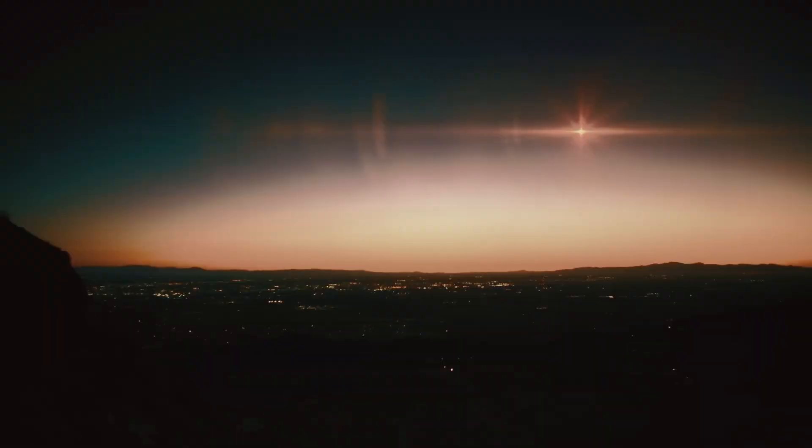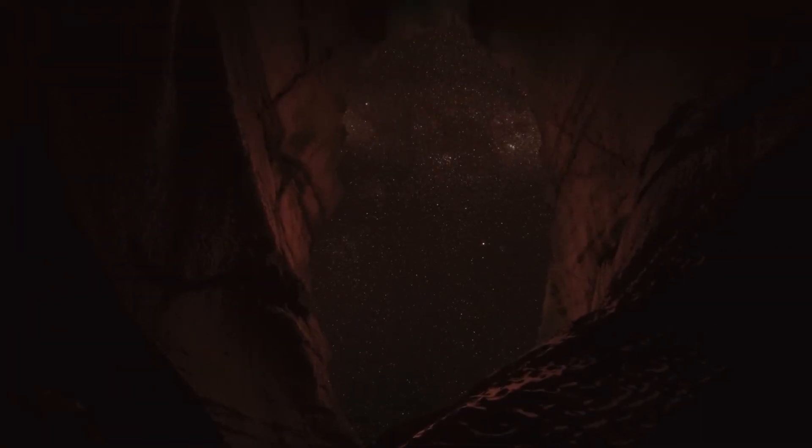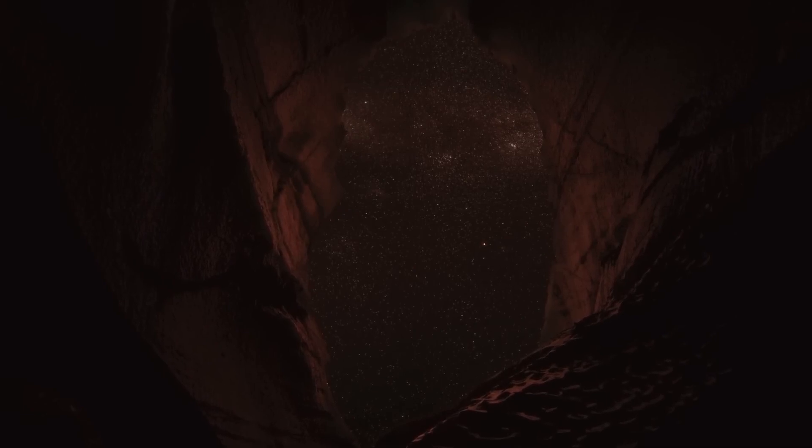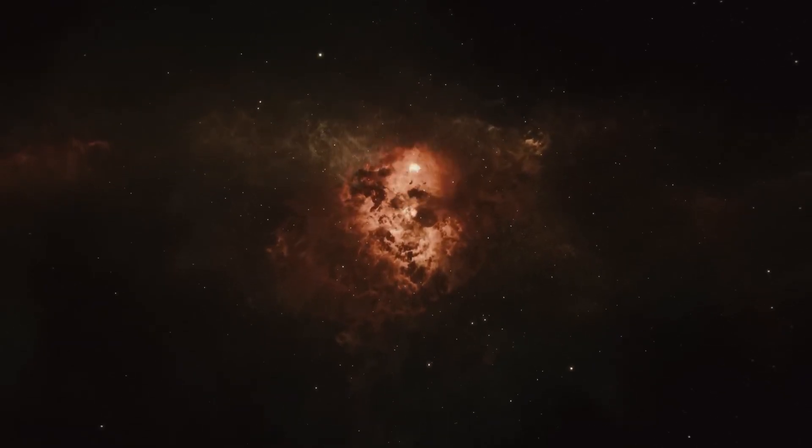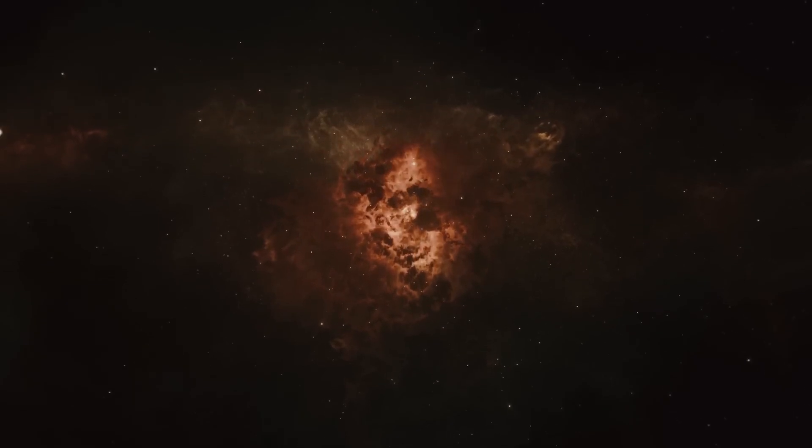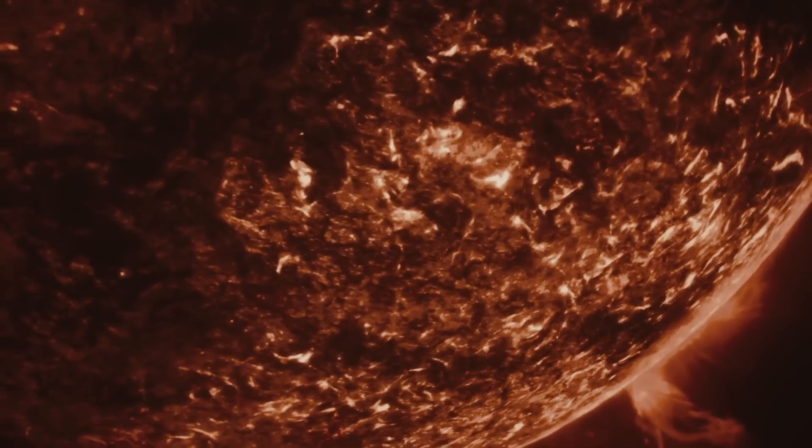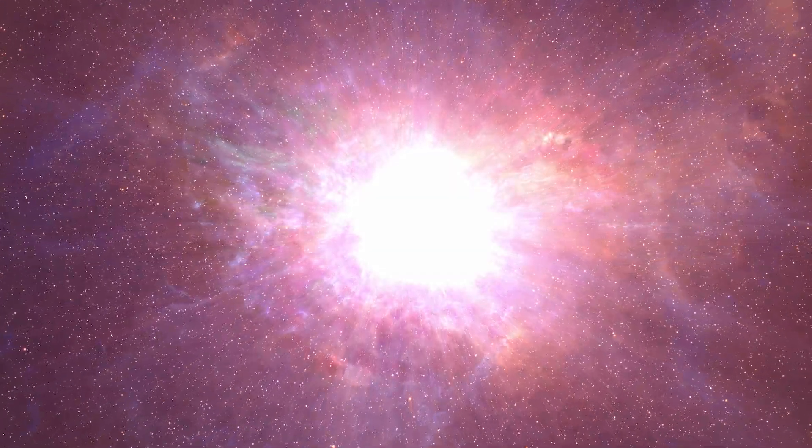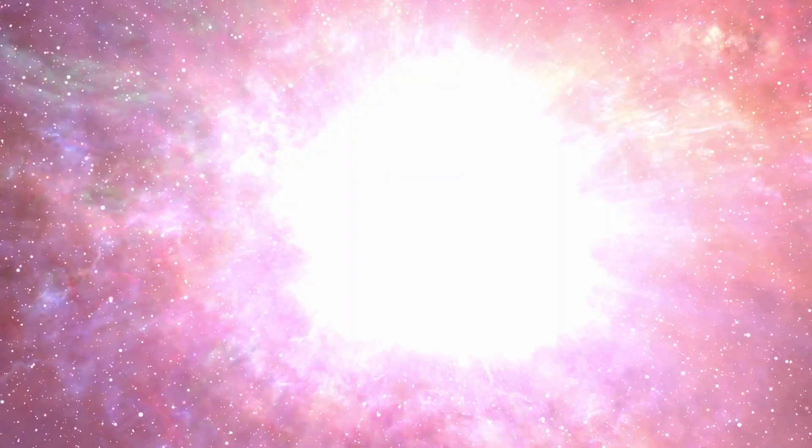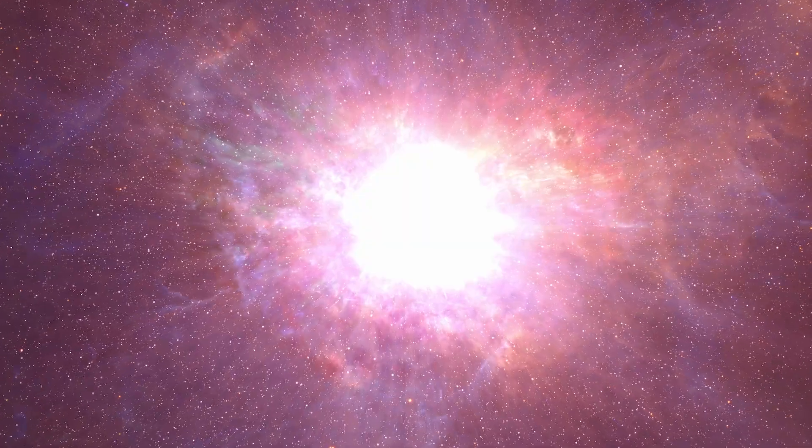However, there is insufficient evidence to say with certainty when this will occur. A supernova is an extremely bright explosion that occurs when a star reaches the end of its life. Although harmless to life on Earth and safe to observe with the naked eye from our planet, the brightness of a supernova depends on the size of the exploding star. Since Betelgeuse is a very large star, its supernova would be extremely bright, comparable to a crescent moon and visible even during the day.